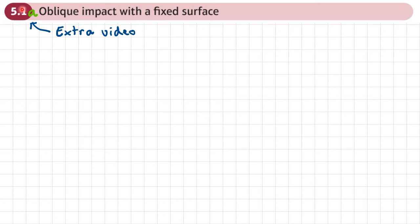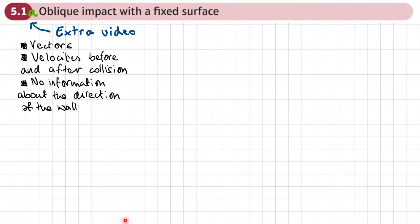This is an extra video for section 5.1, called 5.1a, covering oblique impacts with a fixed surface. This covers content not included in the main examples but appearing in exercise questions — specifically questions where velocities are given as vectors, with information about velocity before and after the collision, but no information about the direction of the wall.